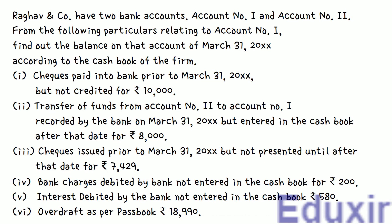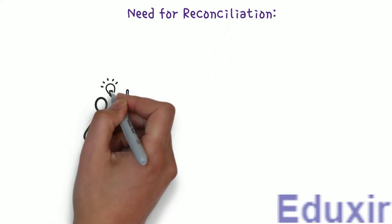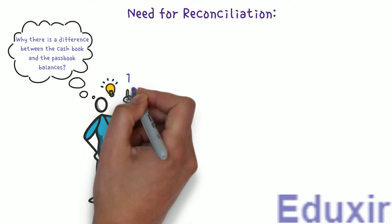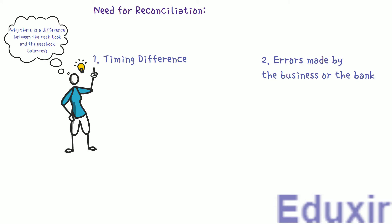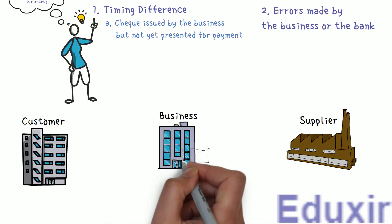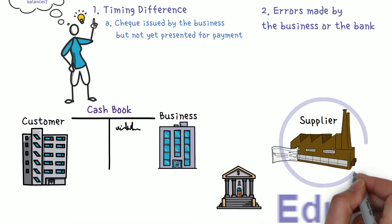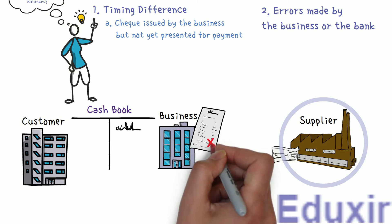Before we proceed with the analysis of these particulars, let's first recap about why there is a need for reconciliation. By preparing the bank reconciliation statement, we get an idea about why there is a difference between the cashbook and the passbook balances. The difference could be due to timing difference in recording the transaction, or errors made by the business or the bank. One reason for timing difference is checks issued by the business but not yet presented for payment. When the business issues a check to the supplier or creditor, it is immediately entered on the credit side of the cashbook. The supplier or creditor has to encash this check by presenting it at the bank. In some cases, the creditor may not present this check immediately, so it will not appear in the bank statement.